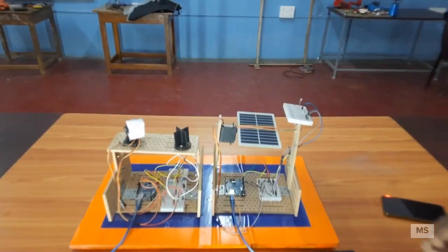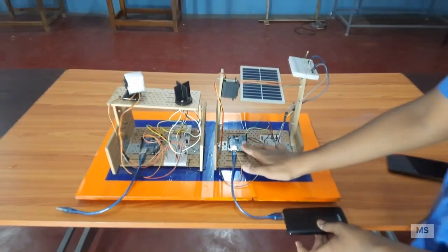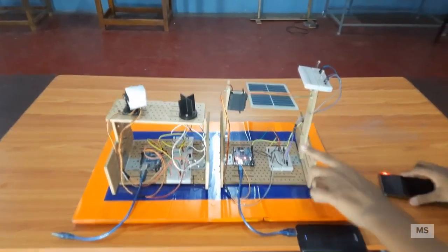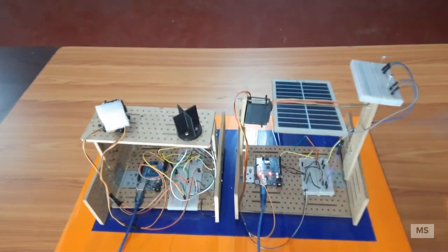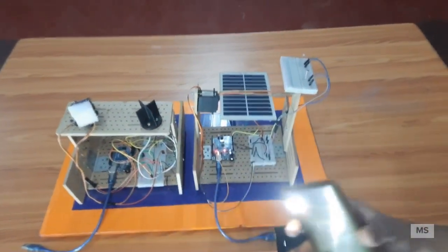Here, I have a power source to power this Arduino Uno. See, the solar panel started rotating, which means we have received the signal from here. Here is a light dependent sensor and here is a torch, which can be used as a sun, example of a sun.